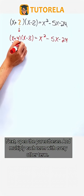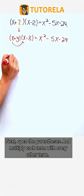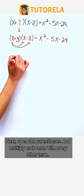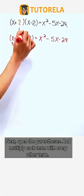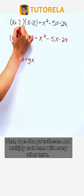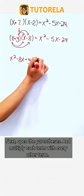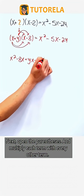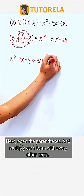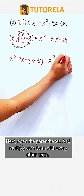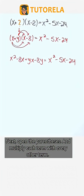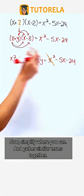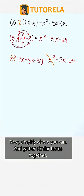Next, open the parentheses and multiply each term with every other term. Now, simplify where you can and gather similar terms together.